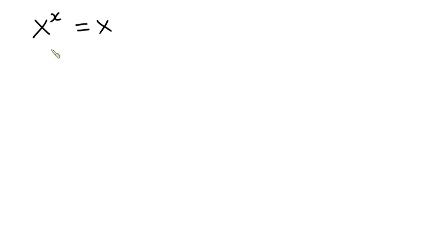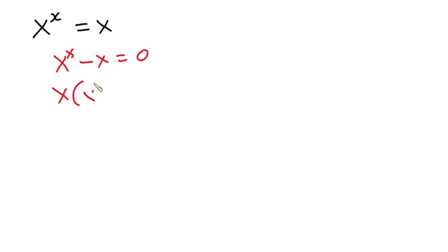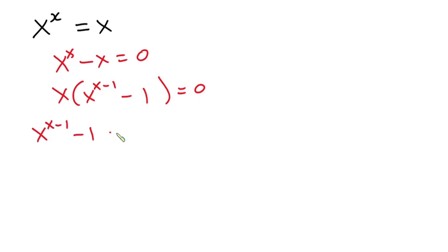So now let's equate everything to zero. We have x to the power x minus x is equal to zero. From here, we can factor x out. So we have x times the quantity x to the power x minus 1, minus 1, is equal to zero. So this means x to the power x minus 1 minus 1 equals zero, or x equals zero.